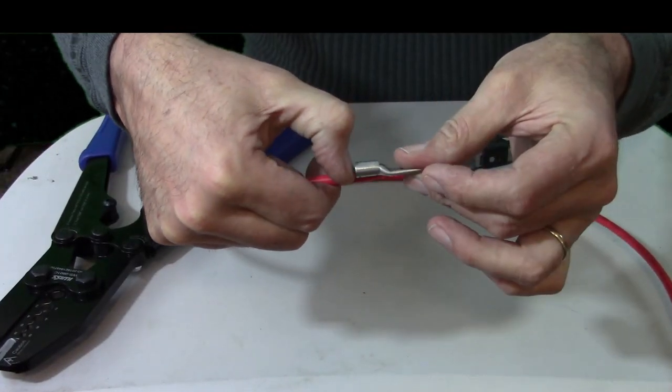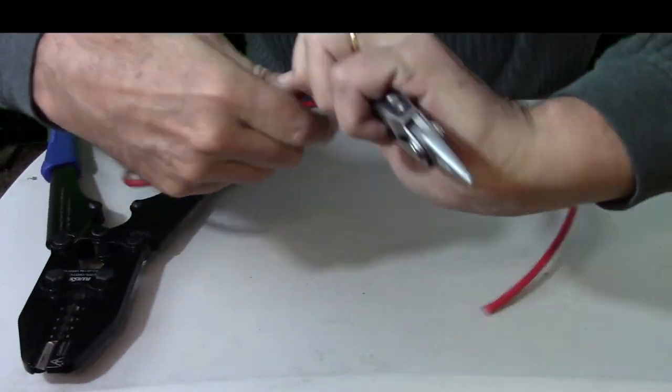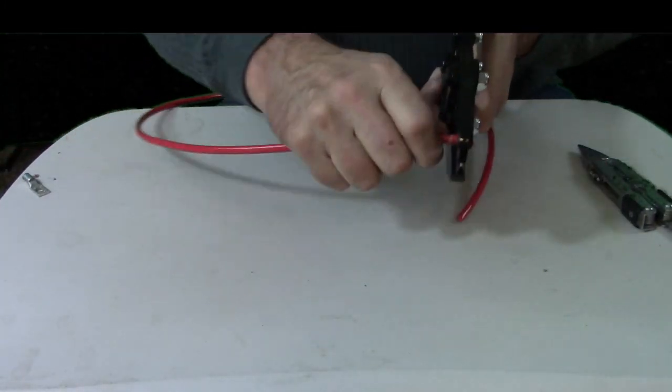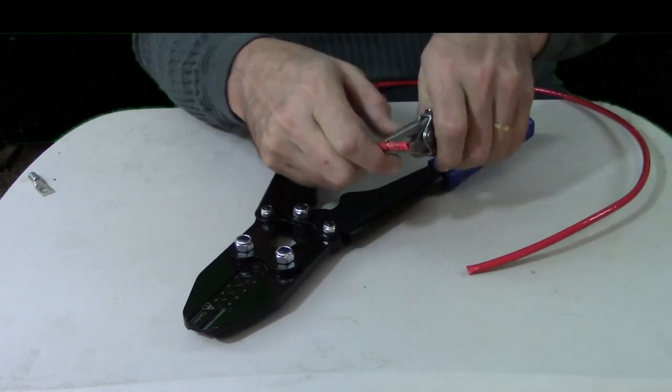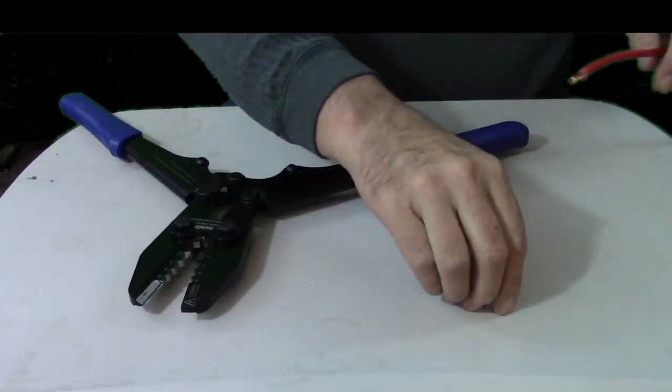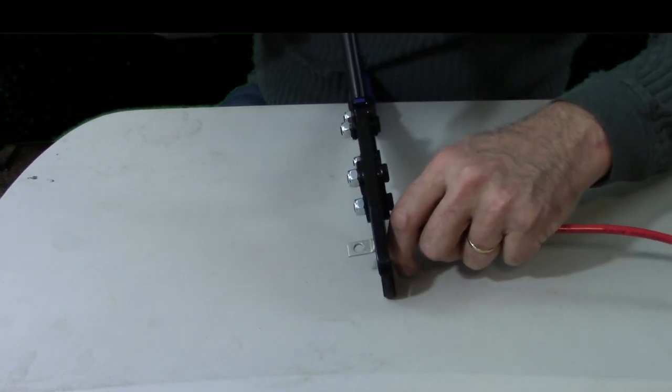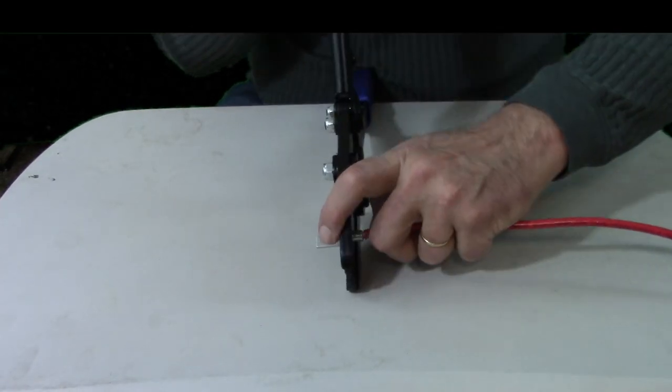Let's jump right on into this. I've got some 6 gauge THHN wire here. I'm going to go ahead and score it with my knife. I'm taking it and I'm going to put the end of it into the crimper, push it down and then I just roll the cord back and forth, the cable back and forth and then I actually finish breaking the sheathing without doing any damage to the wires.